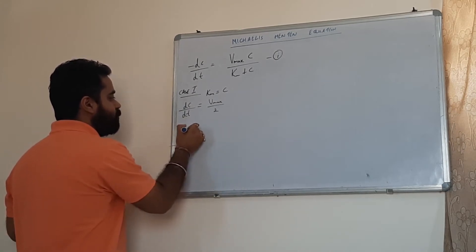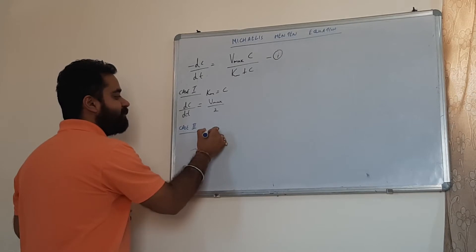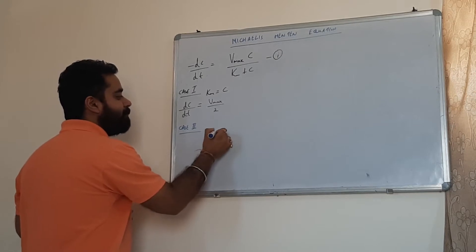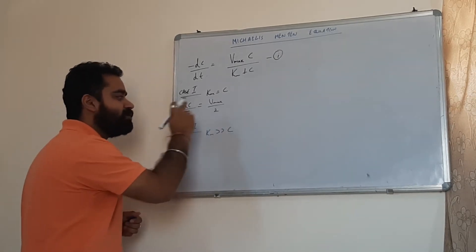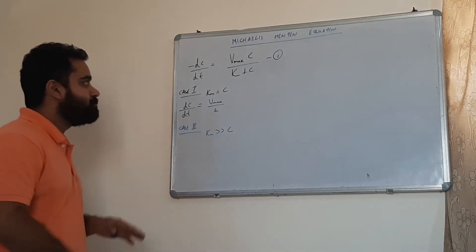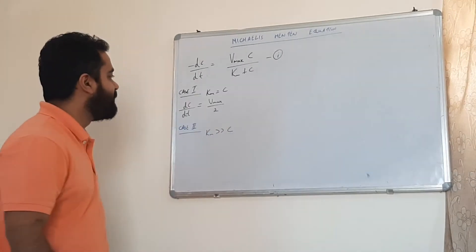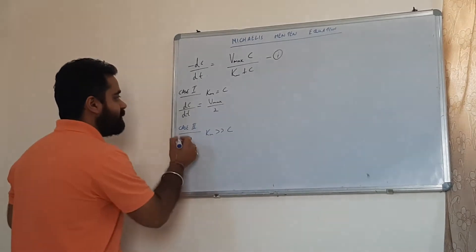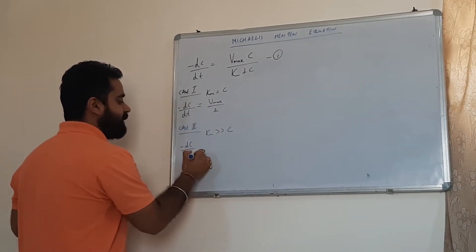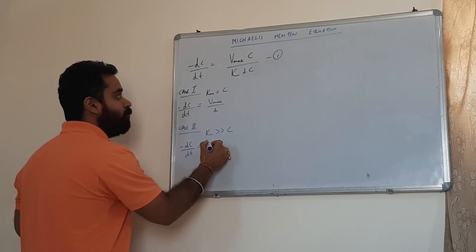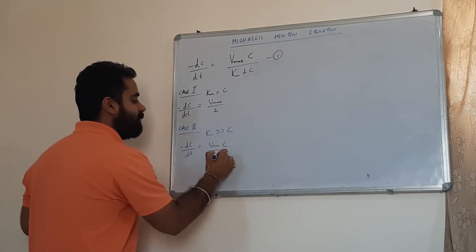In case 2, if the value of Km is very large compared to c, we can ignore the value of c in the denominator. The value minus dC/dt then becomes equal to Vmax·c divided by Km.